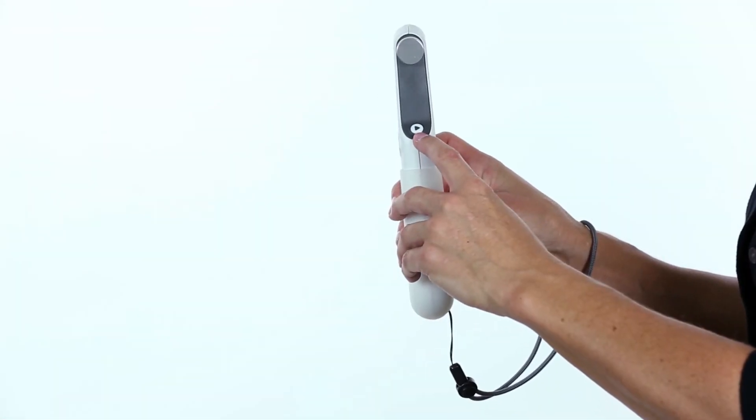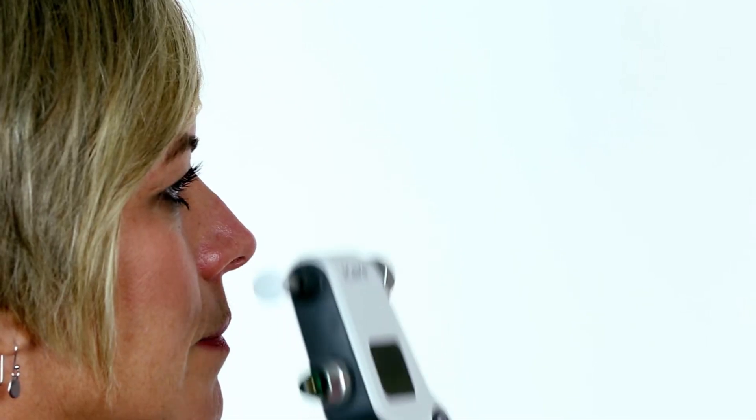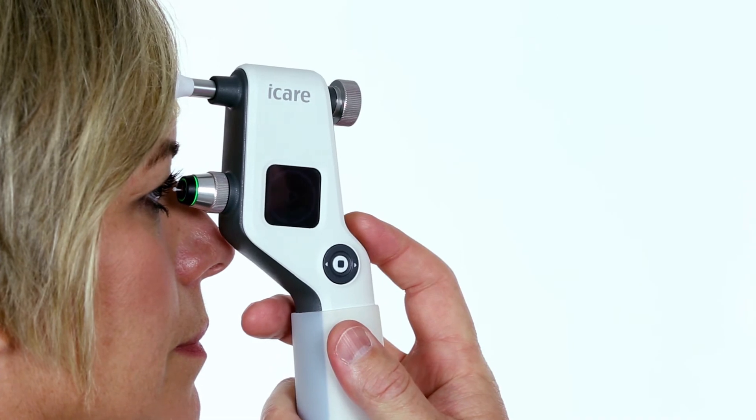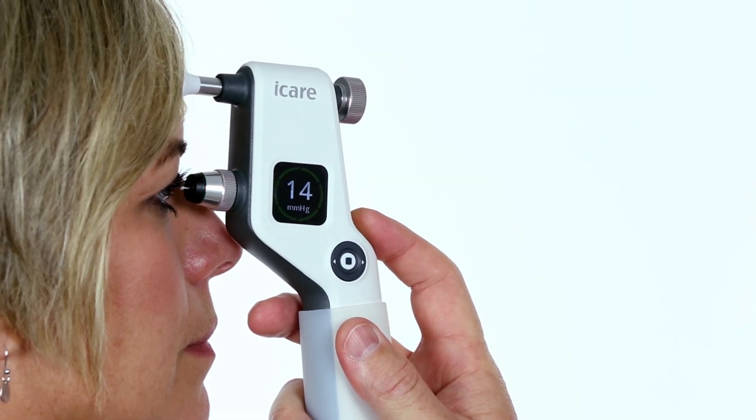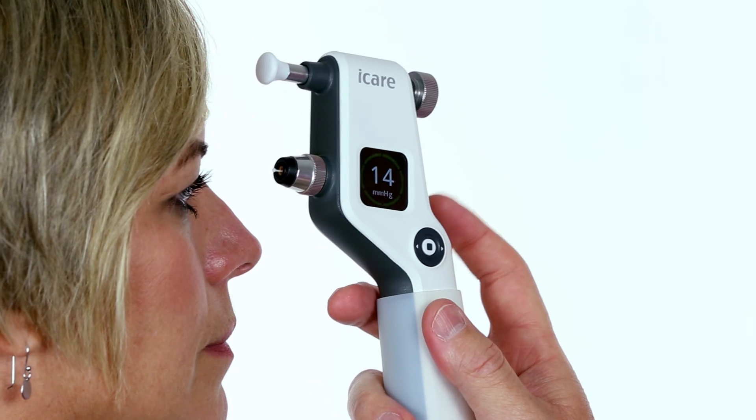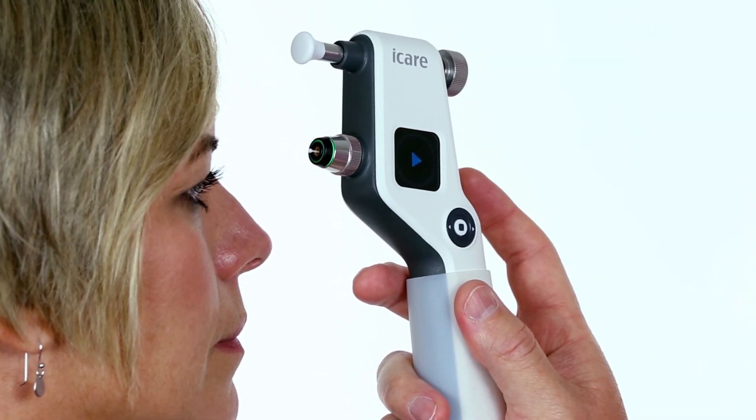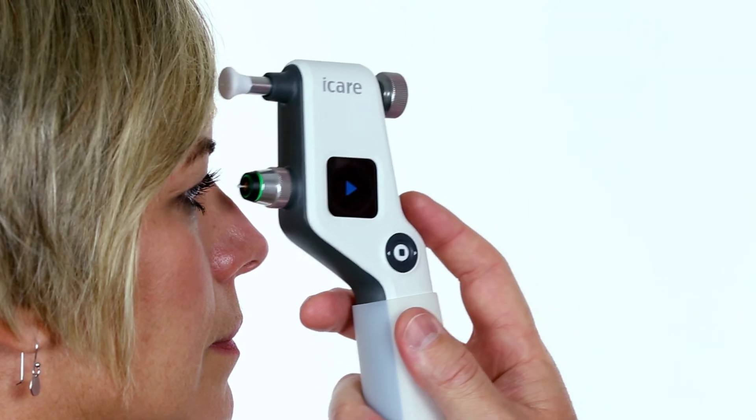Press and hold the measure button to perform the automatic measurement series. Six measurements are taken consecutively. Once the measurement is complete, you will hear a long beep and the final pressure will show on the display. Press the measure button once to clear the reading and repeat the same steps for the fellow eye.